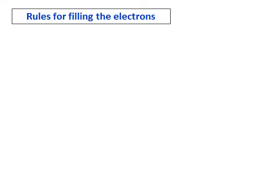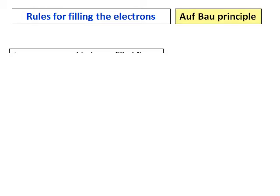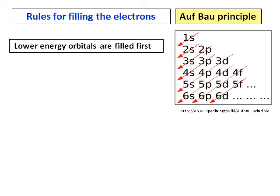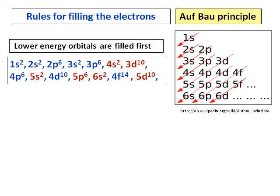Let's learn about the rules for filling in electrons. The first is the Aufbau principle, which states that lower energy orbitals are filled first. The figure on the right shows the order: 1s, 2s, 2p, 3s, 3p. Once you reach 3p, you realize that 4s is lower energy than 3d, so 4s is filled first, then 3d, 4p, 5s.